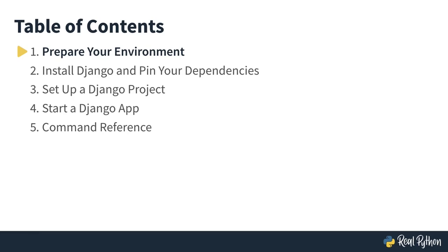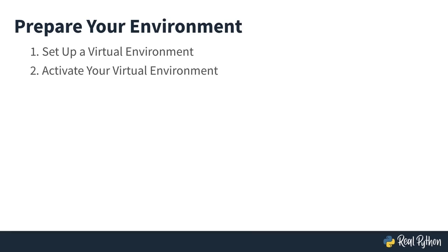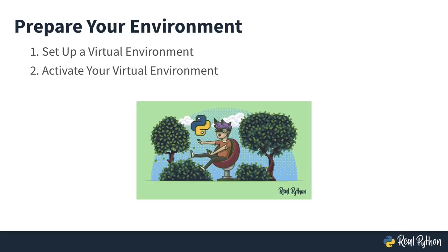In this lesson, you will prepare your environment to get it ready for building your Django project. There are two things you need to do: first, set up a virtual environment, and second, activate that virtual environment. Once you've done these two steps, you're inside a safe place where you can start installing dependencies, install your Django version, and then start working on your Django project.